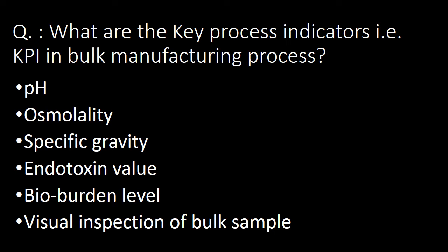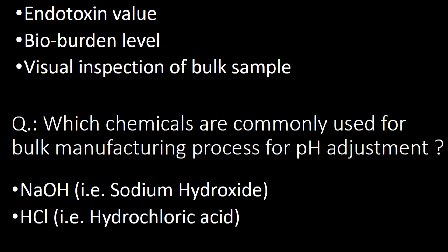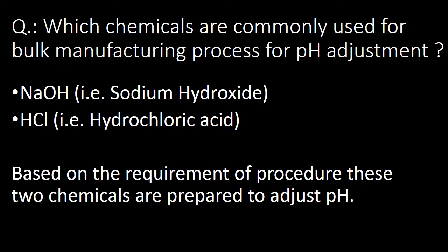Next question: what are the key process indicators (KPI) in bulk manufacturing process? In commonly done manufacturing processes, the KPIs are pH, osmolality, specific gravity, conductivity value, fill level, and visual inspection of the bulk sample.